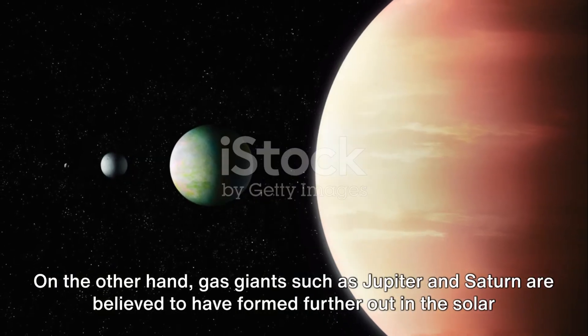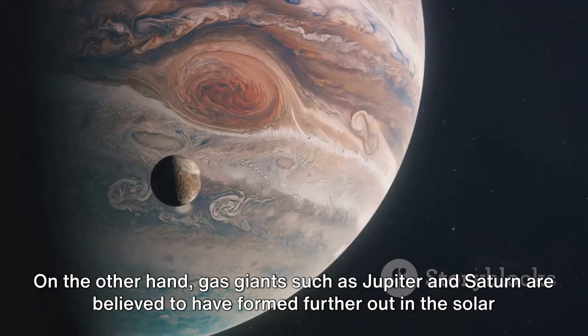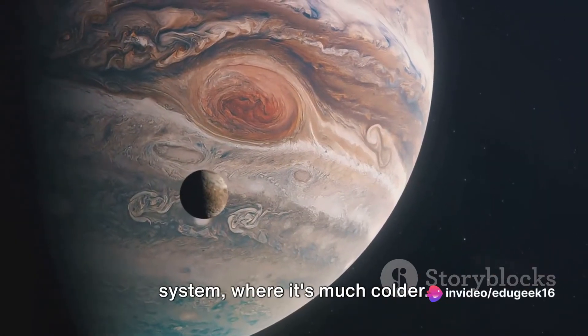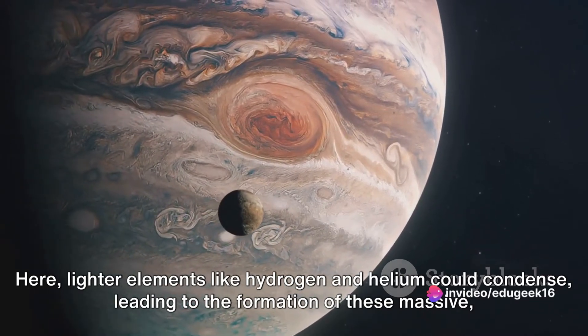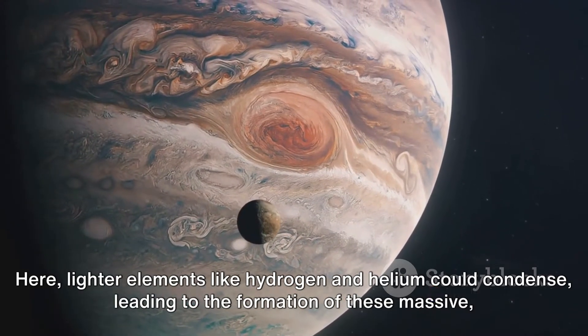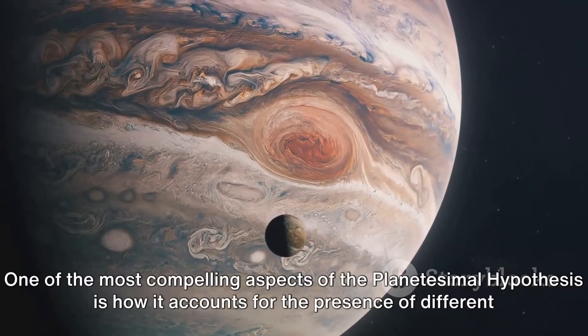On the other hand, gas giants such as Jupiter and Saturn are believed to have formed further out in the solar system where it's much colder. Here, lighter elements like hydrogen and helium could condense, leading to the formation of these massive gas-dominated planets.